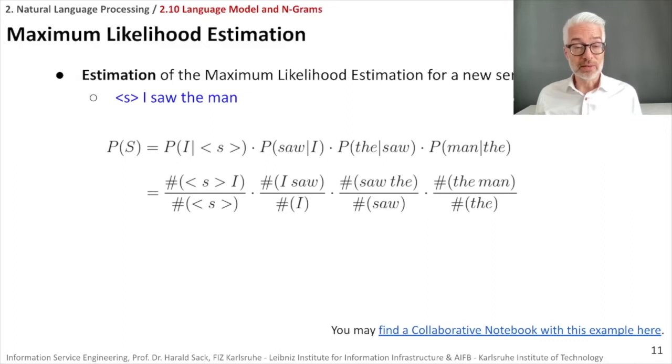We simply then try to do these relative frequency counts, which means we normalize them. We have the bigram counts here on top and then below we have the unigram counts. And then I set in the numbers. The bigram start-I occurs twice, however we have three sentences that start, we have to divide it by three. So it starts with two thirds. Then I saw occurs once, I occurs twice, is one half and so on. You multiply all of these probabilities and you come up with the likelihood estimation. So the probability of the occurrence of the sequence I saw the man comes up to one divided by nine.